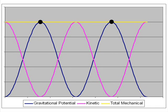At the top of the swing, the energy is all gravitational potential energy, while at the bottom of the swing, the energy is in the form of kinetic energy. The total energy is always constant, shown by the yellow line.